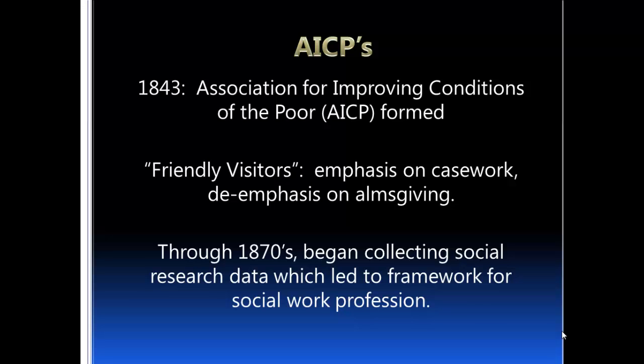The AICPs eventually developed into another type of organization called the charity organization societies, or COSs. Through the 1870s, the AICPs and eventually the COSs began to collect social research data that really laid the framework for the social work profession. Remember, these are privately funded charitable organizations, not government organizations.